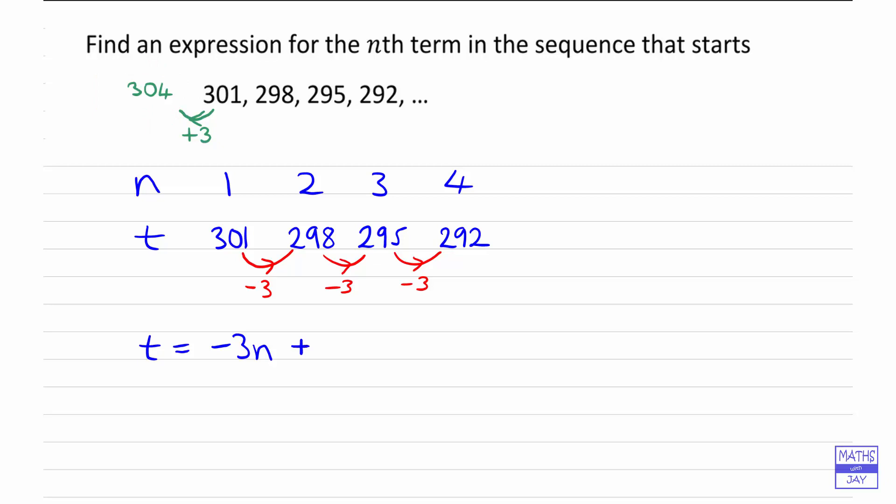So our formula is t = -3n + 304. And you may prefer to write this with the positive number first, so we can see that it's really 304 - 3n.